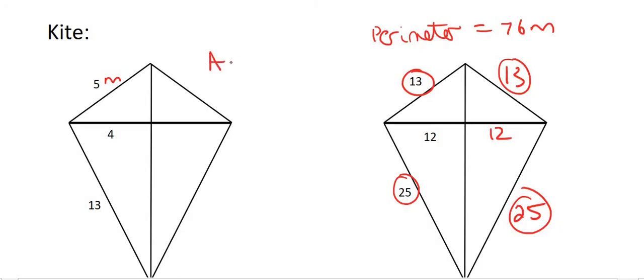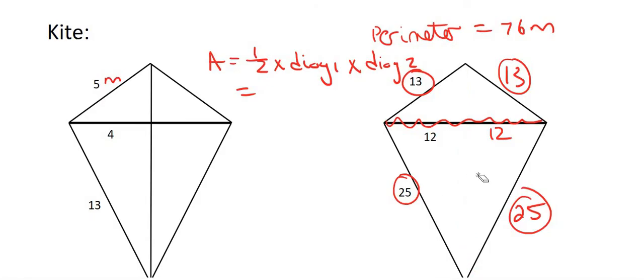Now, the area, remember we said the area of a kite is a half multiplied by diag one multiplied by diag two. And so we know the length of this diagonal. That's just going to be 12. By the way, diagonals are these lines that go in the middle, if you didn't know that. I should have mentioned that. And so we already know the length of that diagonal. That's going to be 24, right? Because that's 12 plus 12. But the problem is we don't have the length of this diagonal going down here. So we just do some Pythagoras.